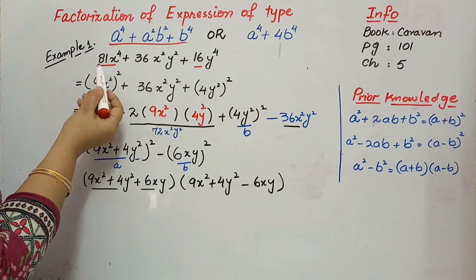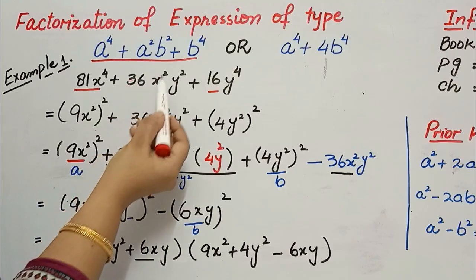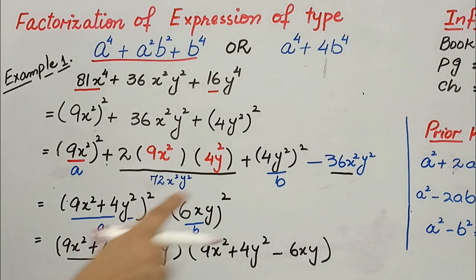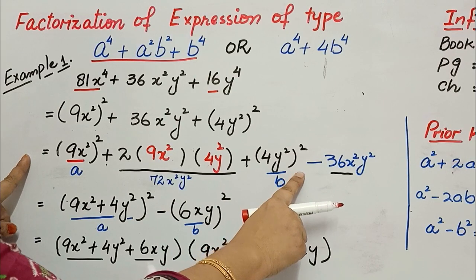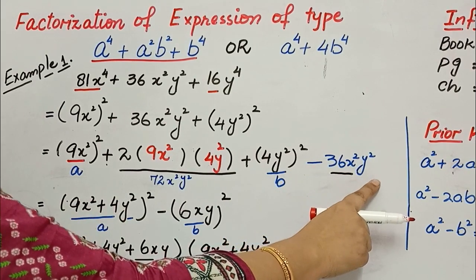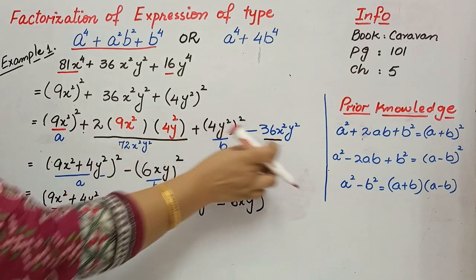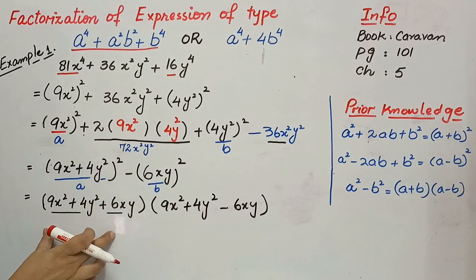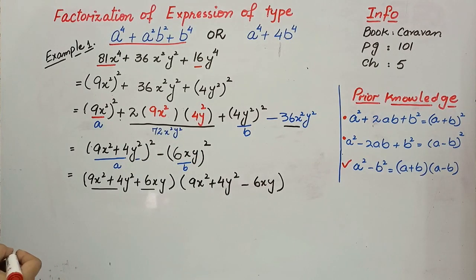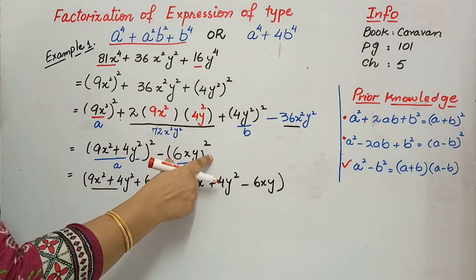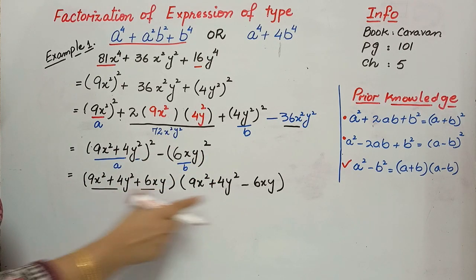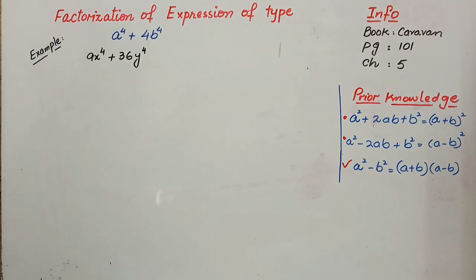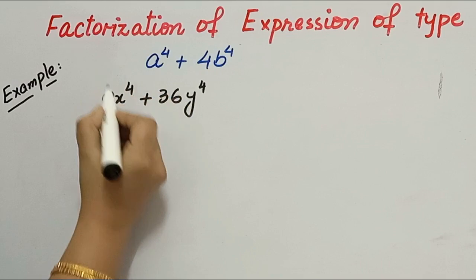Quick review: Example 1 was 81x⁴ + 36x²y² + 16y⁴. We completed the square first, and whatever extra amount we had, we subtracted it. This gave us a perfect square minus a perfect square, then we applied the formula a² − b² = (a + b)(a − b). That's so simple.